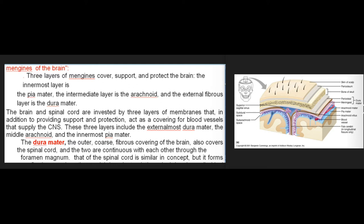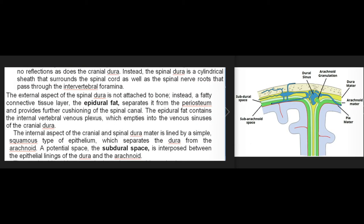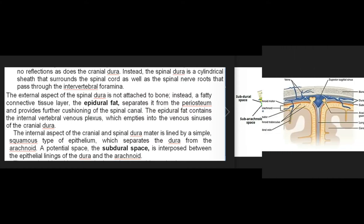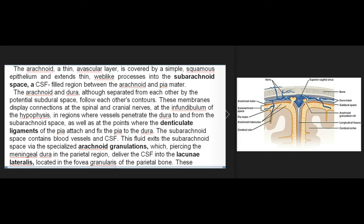The dura mater, the outer coarse fibrous covering of the brain, also covers the spinal cord, and the two are continuous with each other through the foramen magnum. The spinal dura forms no reflections as does the cranial dura; instead it is a cylindrical sheet surrounding the spinal cord and spinal nerve roots that pass through the intervertebral foramina. The external aspect of the spinal dura is not attached to bone; instead, a fatty connective tissue layer — the epidural fat — separates it from the periosteum, providing further cushioning. The epidural fat contains the internal vertebral venous plexus, which empties into the venous sinuses of the cranial dura.